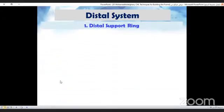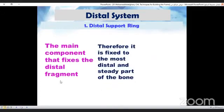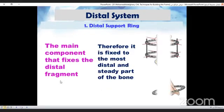The first ring in the distal block is the distal support ring. This is the main component that fixes the distal fragment. Therefore, it has to be fixed to the most distal and steady part of the bone.